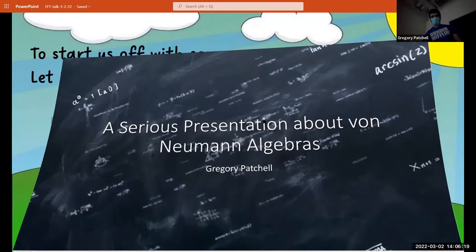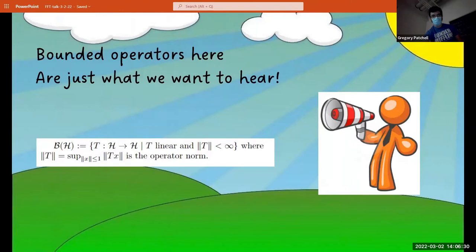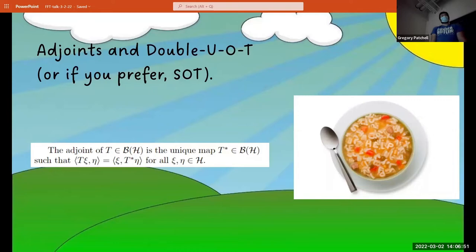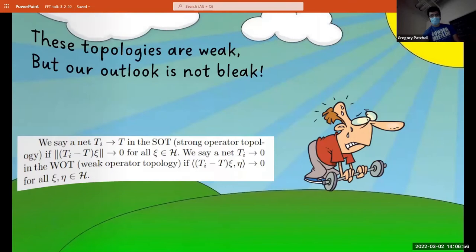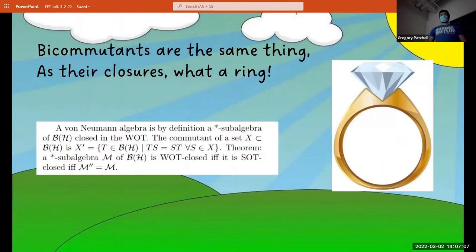To start us off with some grace, let's take the Hilbert space. Bounded operators here are just what we want to hear. Subalgebras are of one ointment, if we see that they are closed in. Adjoints in WOT, or if you prefer, SOT. These topologies are weak, but our notebook is not bleak. Bicommutants are the same thing as these closures — what a ring.